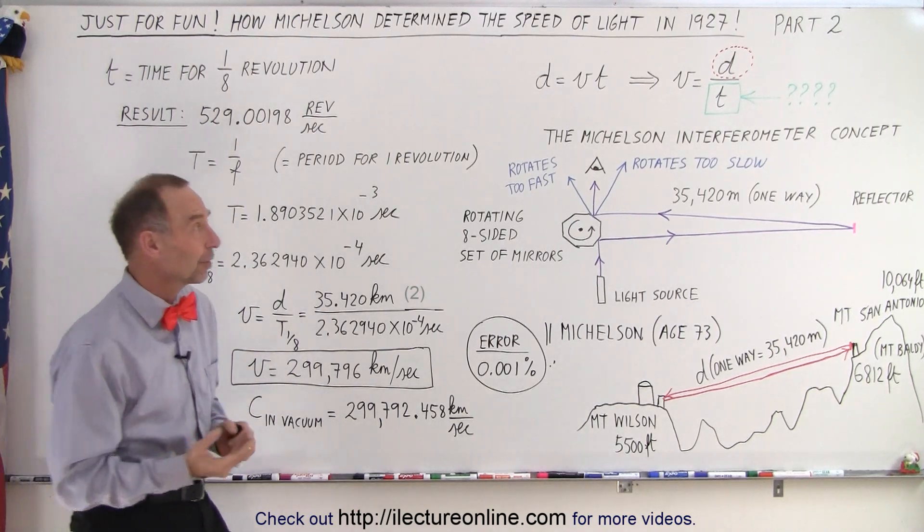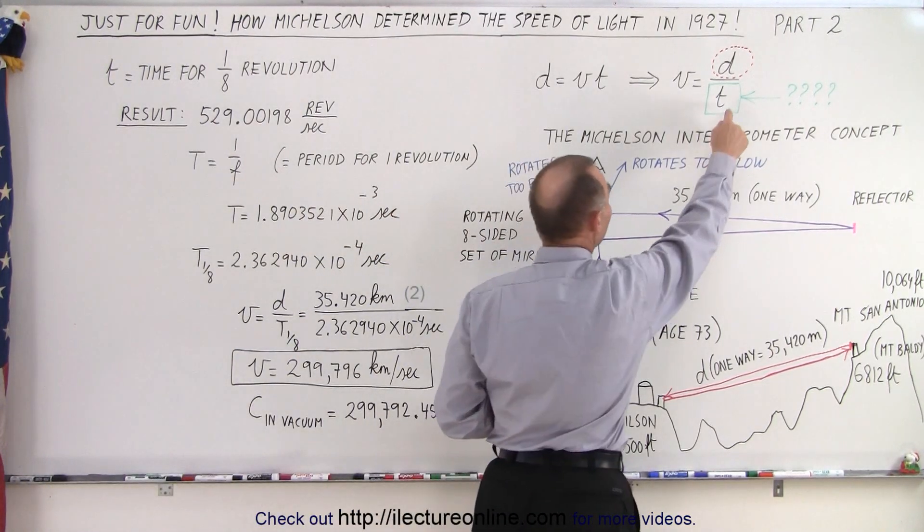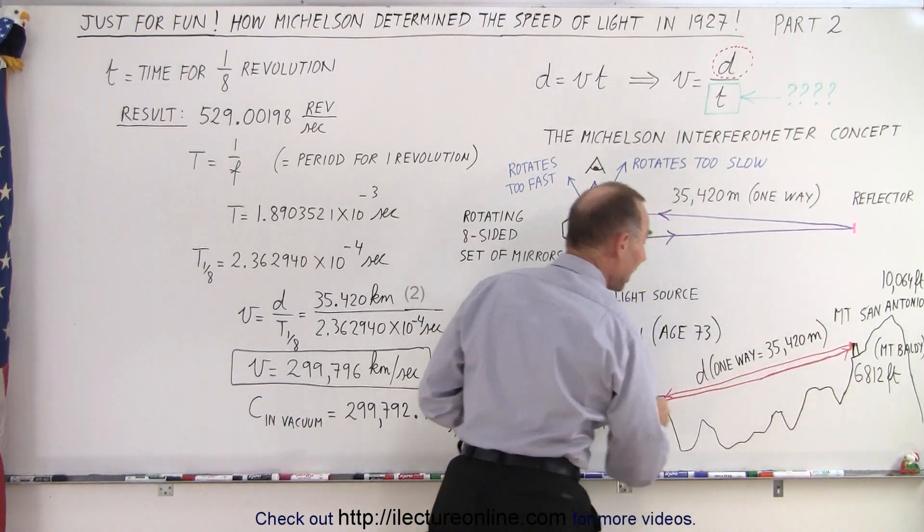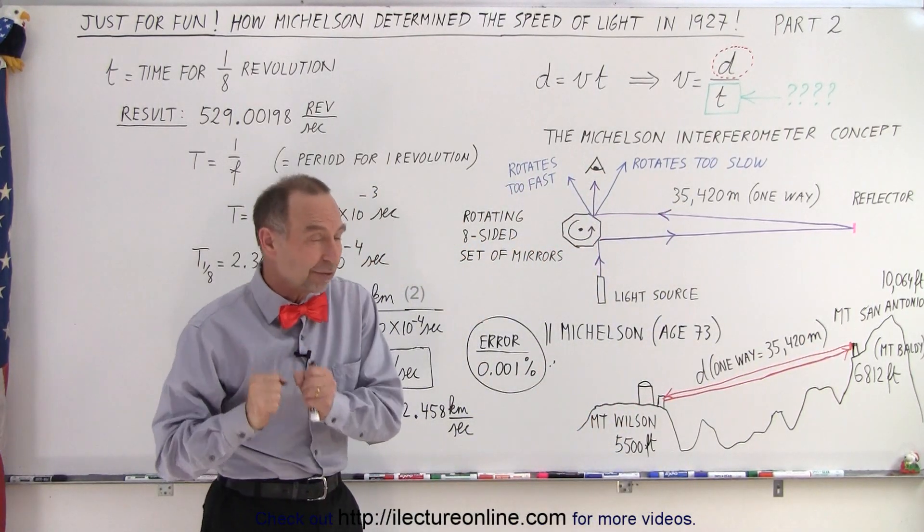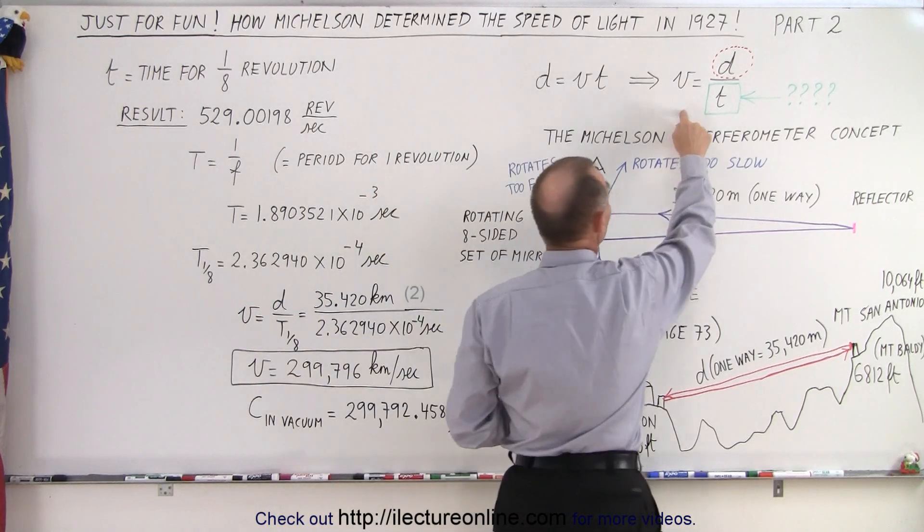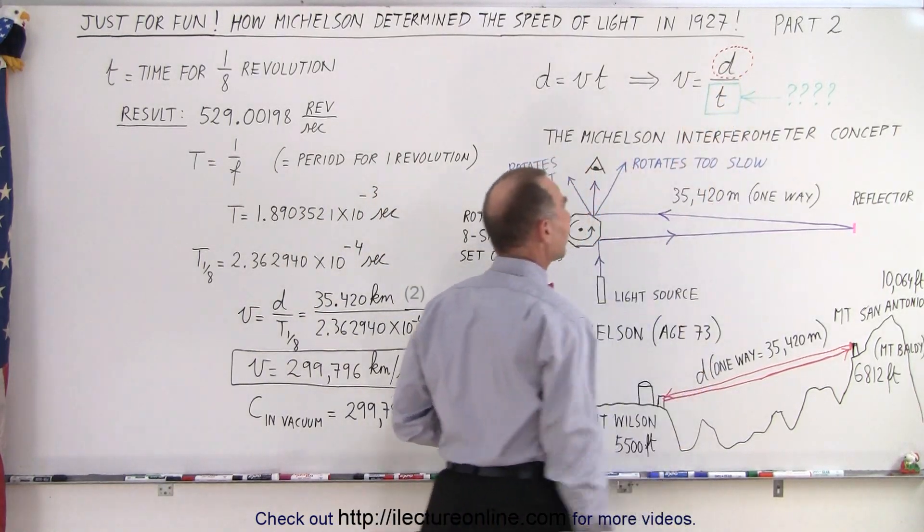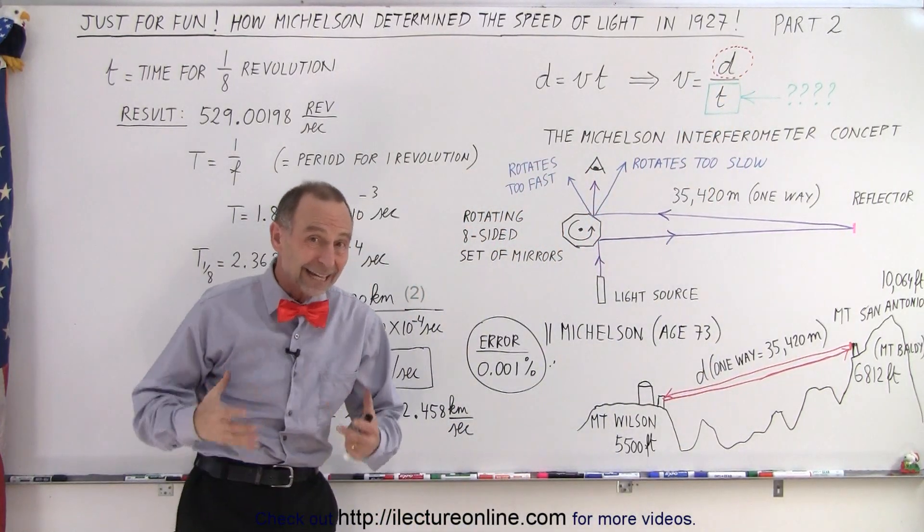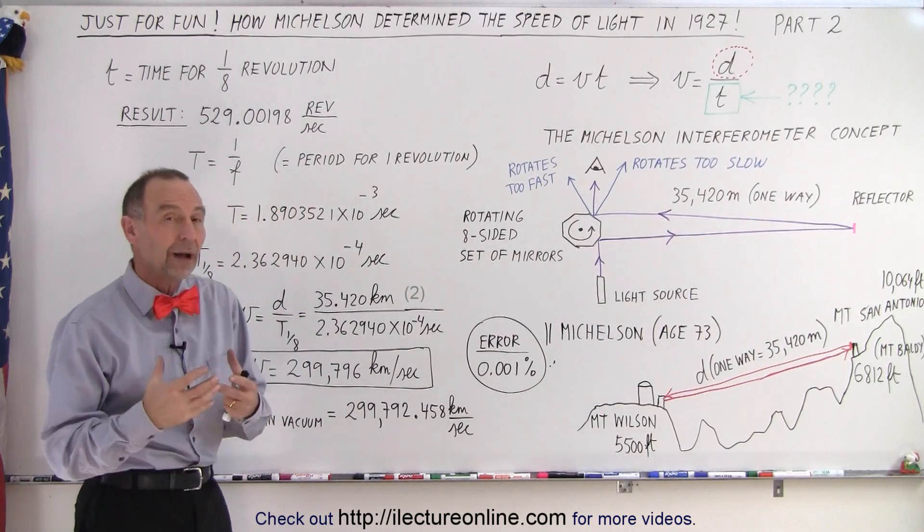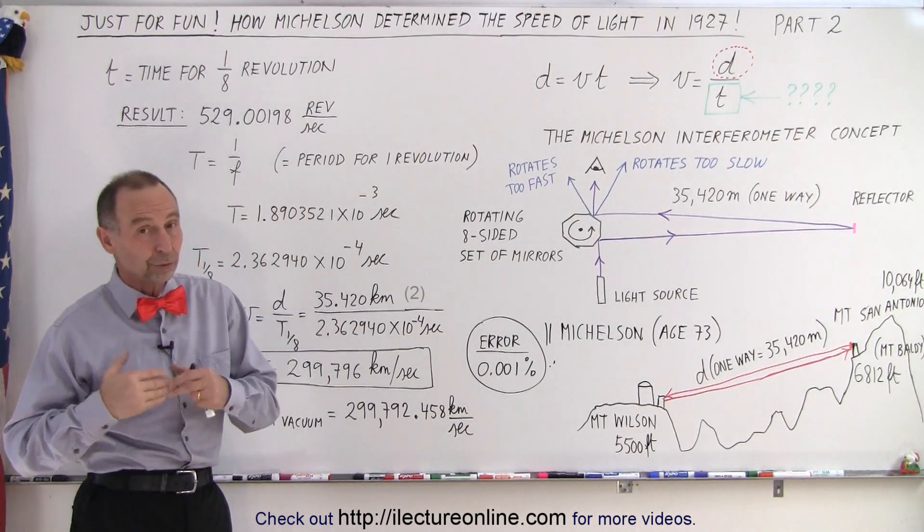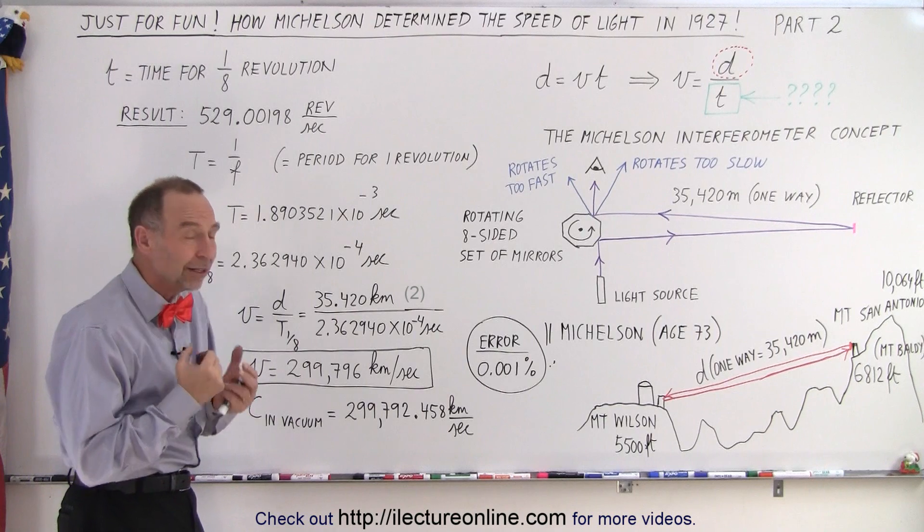Now the second part of the equation was how much time did light take to go from here to there and back. After all, if you're trying to find the speed of light, you take the distance that it travels and divide it by the time that it took to get there. Now the next big hurdle was to figure out how long that took.